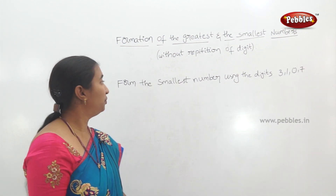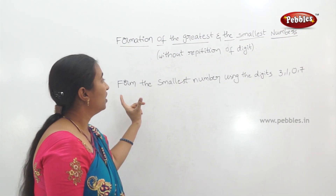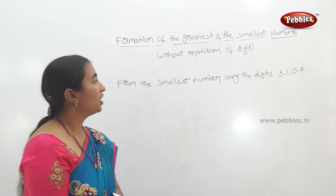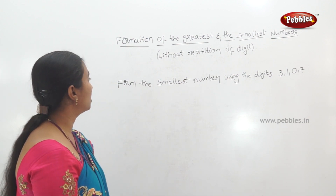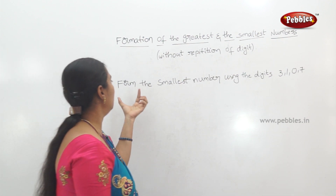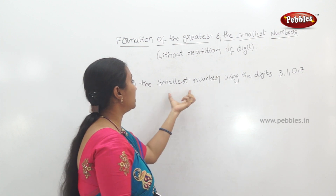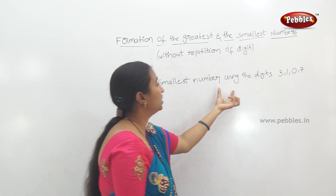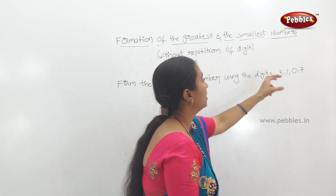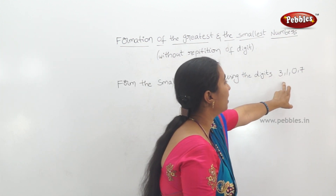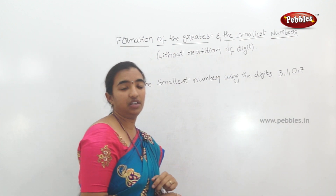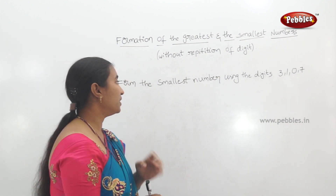Let's show you an example with the smallest number. Form the smallest number using the digits 3, 1, 0, and 7. We have 4 digits.